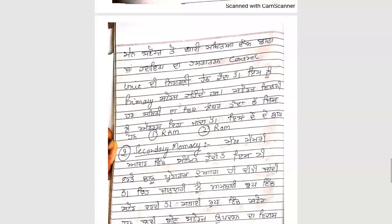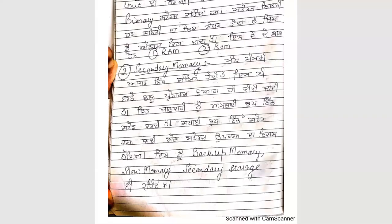Next is Secondary Memory. Secondary Memory is the auxiliary memory, which is the main memory but its size is limited. We only have running programs temporarily stored. When we have any data or instructions permanently stored, we need extra memory called Secondary Memory. This memory is also called Backup Memory, Slow Memory, or Secondary Storage Device.